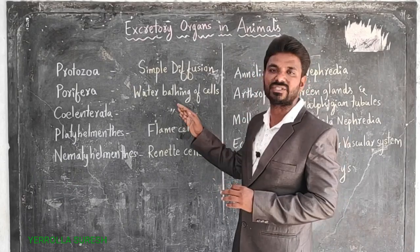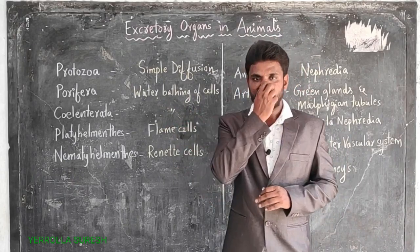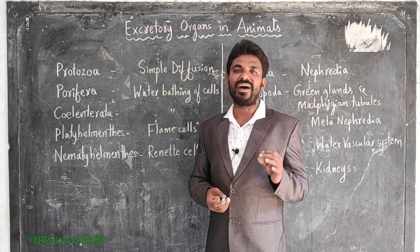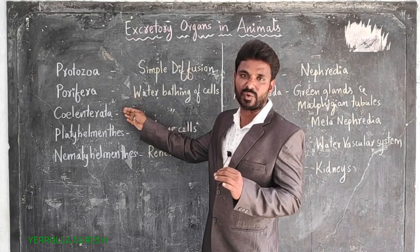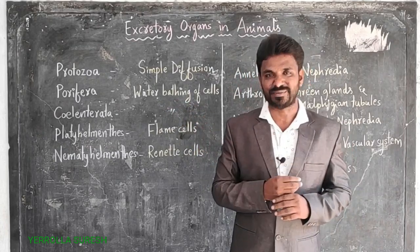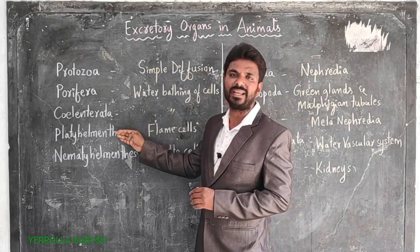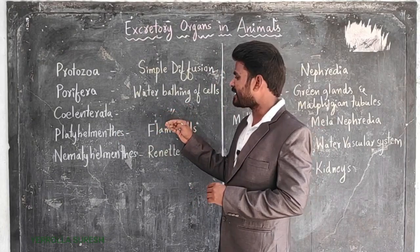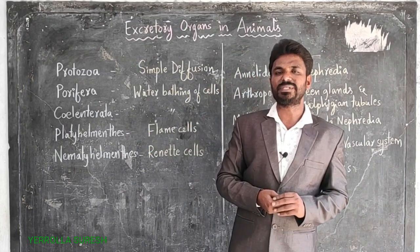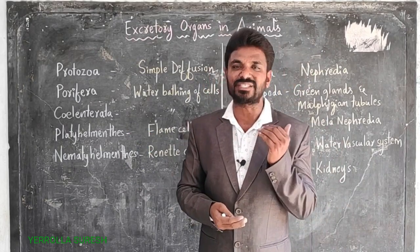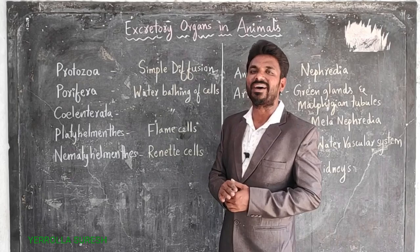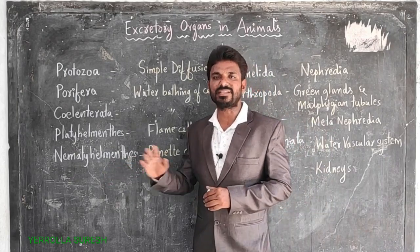Next is Coelenterata. Organisms like Hydra and Jellyfish come under Coelenterata. They also adopt the same method — water bathing of cells — for the elimination of waste materials. Moving to Platyhelminthes, organisms like tapeworm and liver fluke belong to this group. In Platyhelminthes, flame cells are specially developed cells used only for the process of excretion.